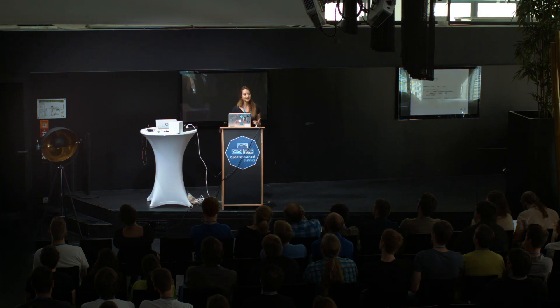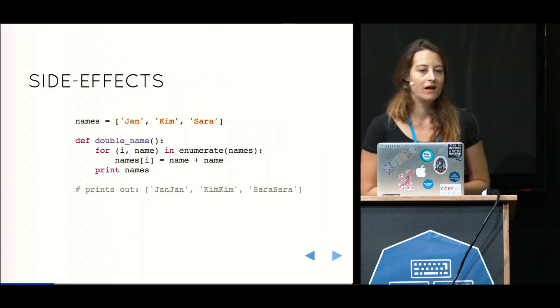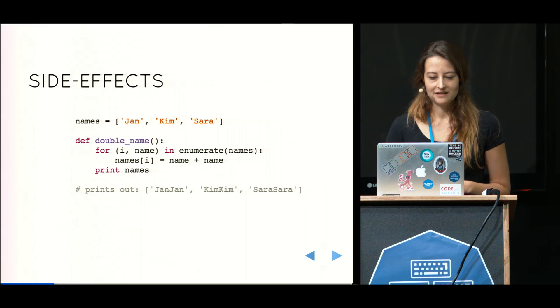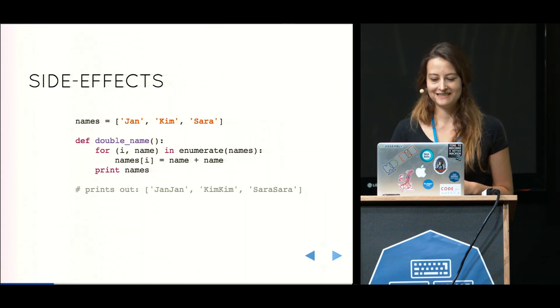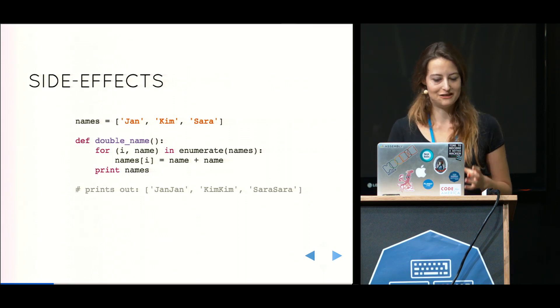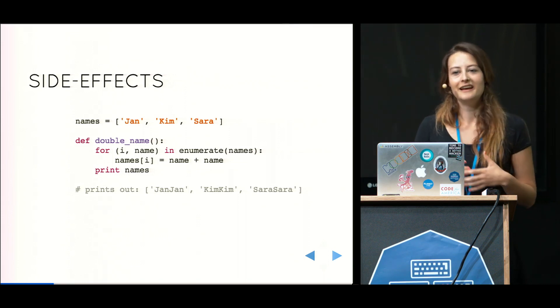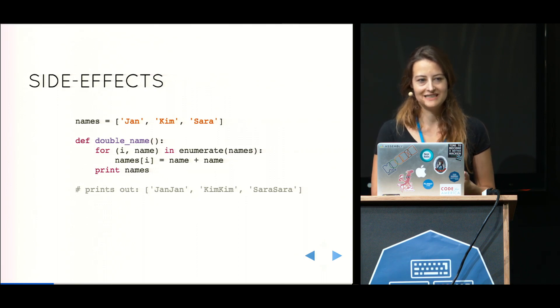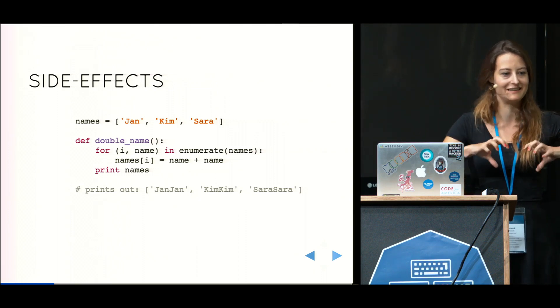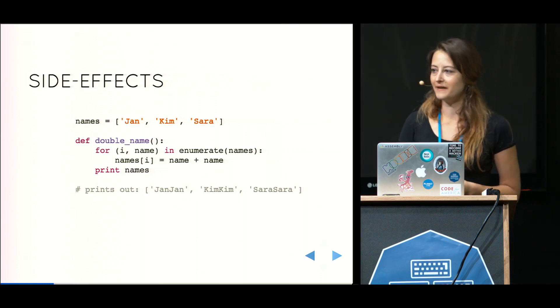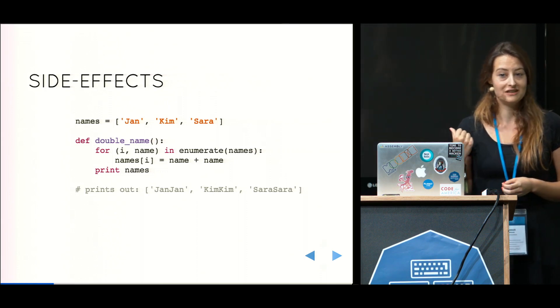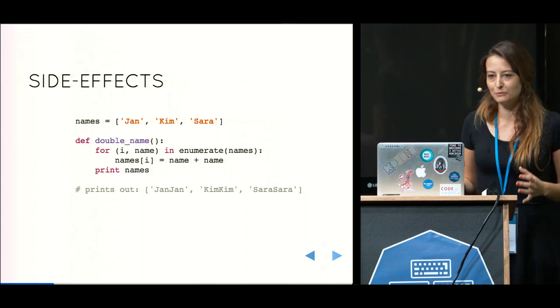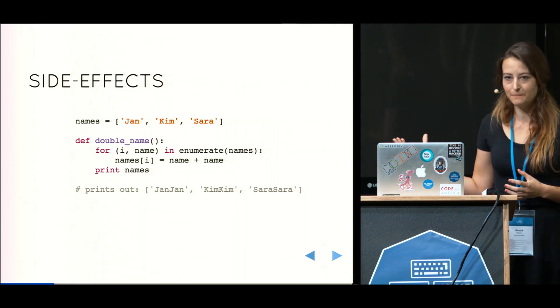I'm going to give you one more example because it goes a little bit to side effects as well. This is a function that takes a list with names, and then for every name in that list, it doubles it. It's name plus name, and it changes that so that it prints out JanJan instead of Jan, KimKim instead of Kim, et cetera. In so doing, this function changes the state of the list, and because it changes something outside of it, the list is not inside the function, it's outside of it. We call this a side effect of the function. And in this case, the function doesn't do anything else. All it does, its entire purpose is having a side effect. It doesn't return anything.